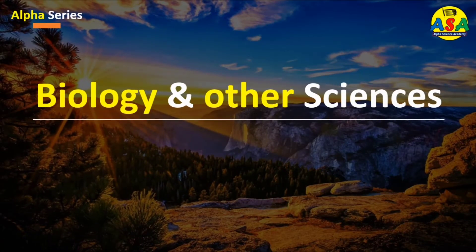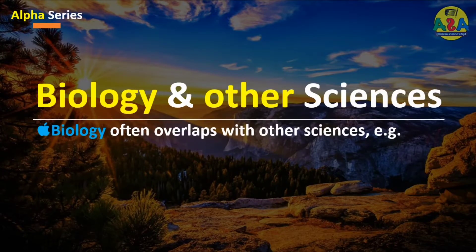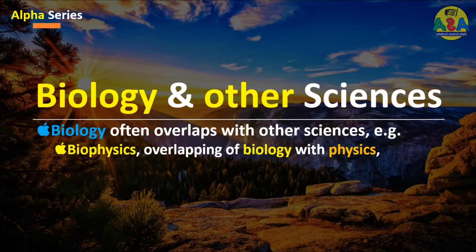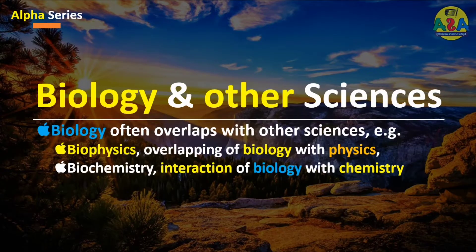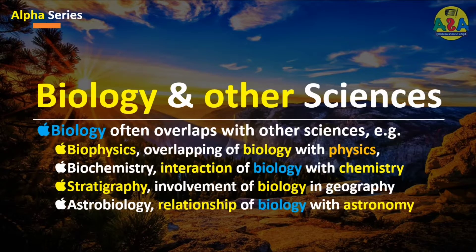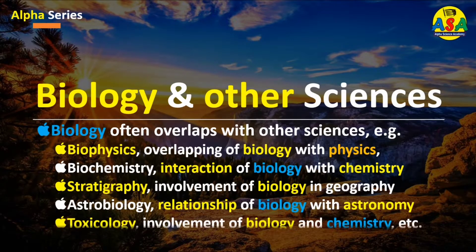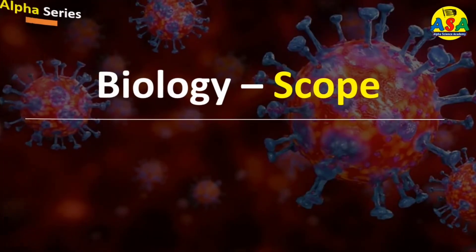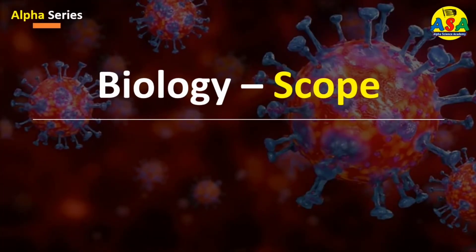Biology often overlaps with other sciences. For example, biophysics is an overlapping of biology with physics; biochemistry is an interaction of biology with chemistry; stratigraphy is an involvement of biology in geography; astrobiology is a relationship of biology with astronomy; and toxicology is an involvement of biology and chemistry.